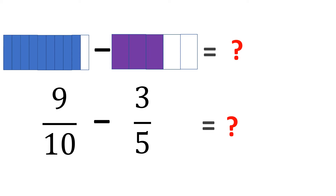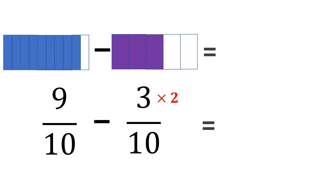The best way to solve it is to make the denominators the same. To make them the same, you must multiply 5 by 2. But for every fraction, whatever you do to the denominator, you must also do the same to the numerator. So it must be times 2 as well. That means 5 times 2 is 10, and 3 times 2 is 6. So it's now 6 tenths, and they have the same denominator. Now our figure doesn't look like 6 tenths.